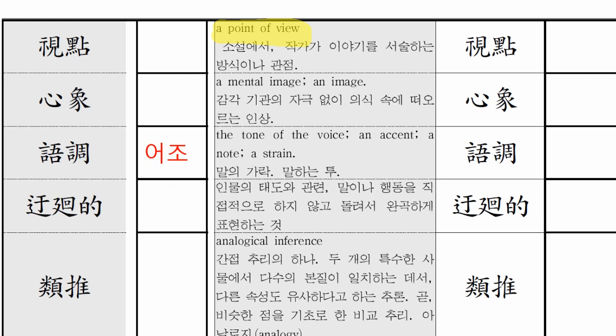영어 단어는 어떻게 읽을까? 같이 읽어볼게요. 어조. 심상. 시점. 세 단어 읽어볼게요. 어조. 심상. 시점. 그 다음에 우회적. 뜻이 뭘까? 인물의 태도와 관련해서 말이나 행동을 직접적으로 하지 않고 돌려서 완곡하게 표현하는 것.